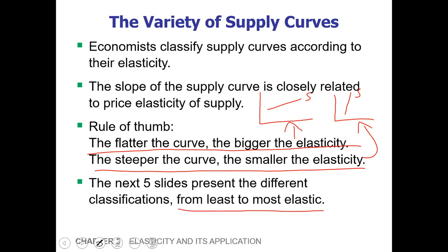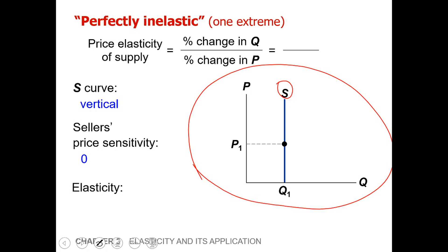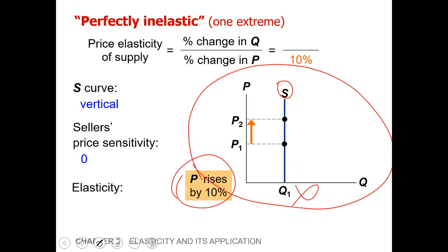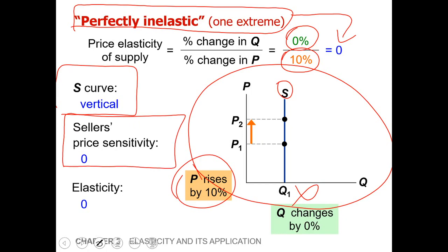Let's go from least to most elastic supply curves. The first is the perfectly inelastic supply curve — this is one extreme. The supply curve is perfectly vertical. As the price level increases from P1 to P2 by 10 percent, the quantity does not change at all. So in the formula, price changed by 10 percent and quantity changed by 0 percent; dividing 0 by 10 gives 0. This means it's a perfectly inelastic supply curve with a price elasticity of supply equal to zero. The supply curve is a vertical straight line, sellers' price sensitivity is zero, and elasticity is zero.